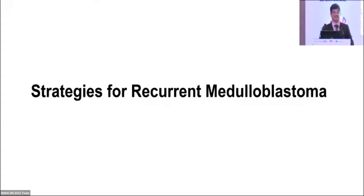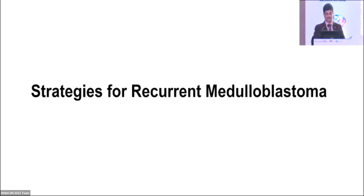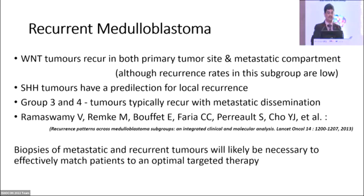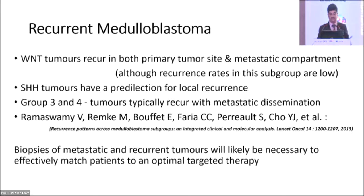Recurrent disease is more challenging than residual disease. Recurrent medulloblastoma is difficult — from molecular studies, SHH subtype tends toward local recurrence while others tend to have distant metastatic recurrence. Whenever we see a recurrence, we need to biopsy and confirm it's real disease progression rather than post-treatment change, because that helps in planning adjuvant therapy.